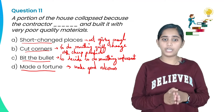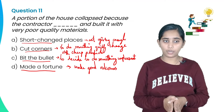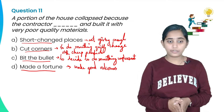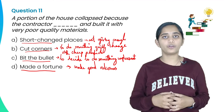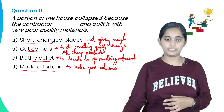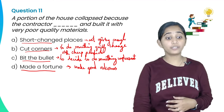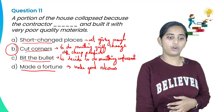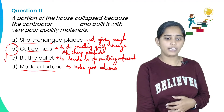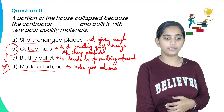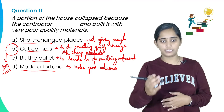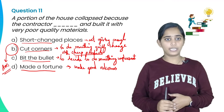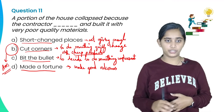So the answer is: a portion of the house collapsed because the contractor cut corners and built it with very poor quality materials. 'Cut corners' means to do something quickly with cheap products. Option B is the answer.